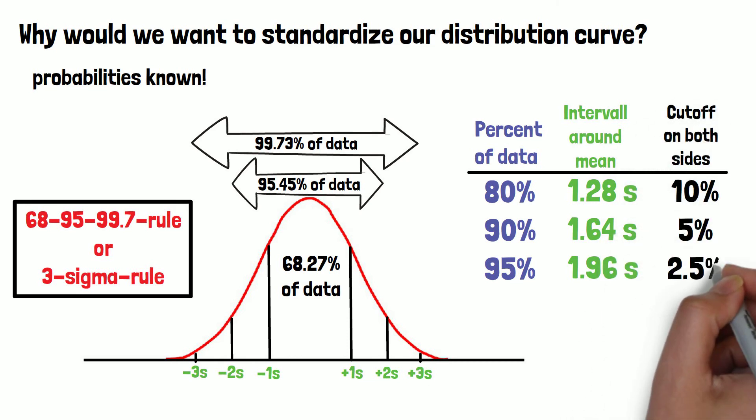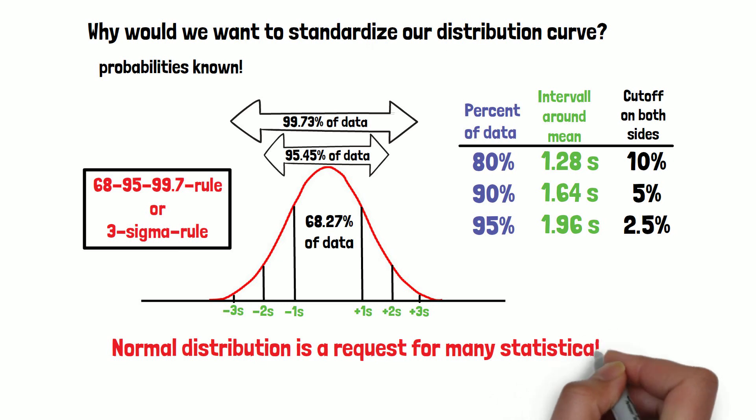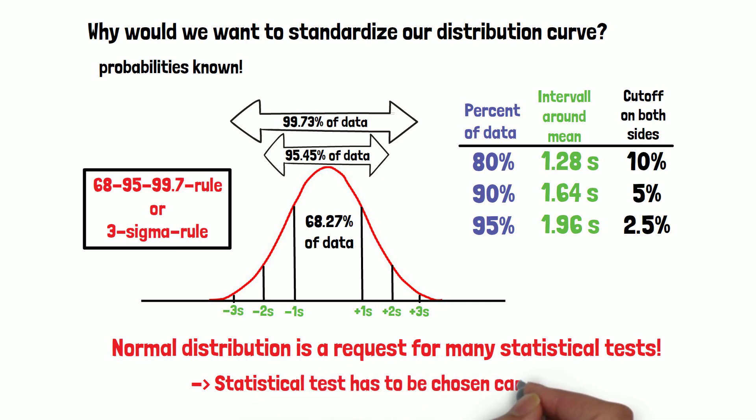The assumption of the data being normally distributed is a requirement for many statistical tests. But it has to be analyzed carefully if that is really the case, since a test based on that assumption, when actually the data is not normally distributed, can result in non-reliable test results. Therefore, the statistical test has to be chosen very carefully.